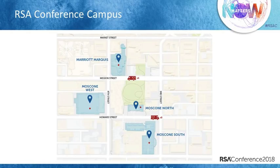First, the essentials. We're going to start by looking at the RSA Conference Campus. There are four main buildings, three of which are Moscone buildings — Moscone North, South, and West — and then the Marriott Marquis, which is just about a five-minute walk from Moscone, is also part of the campus. The funny little trucks you see on the map are actually food trucks. There are a total of 12 during the week that you'll be able to purchase lunch from.